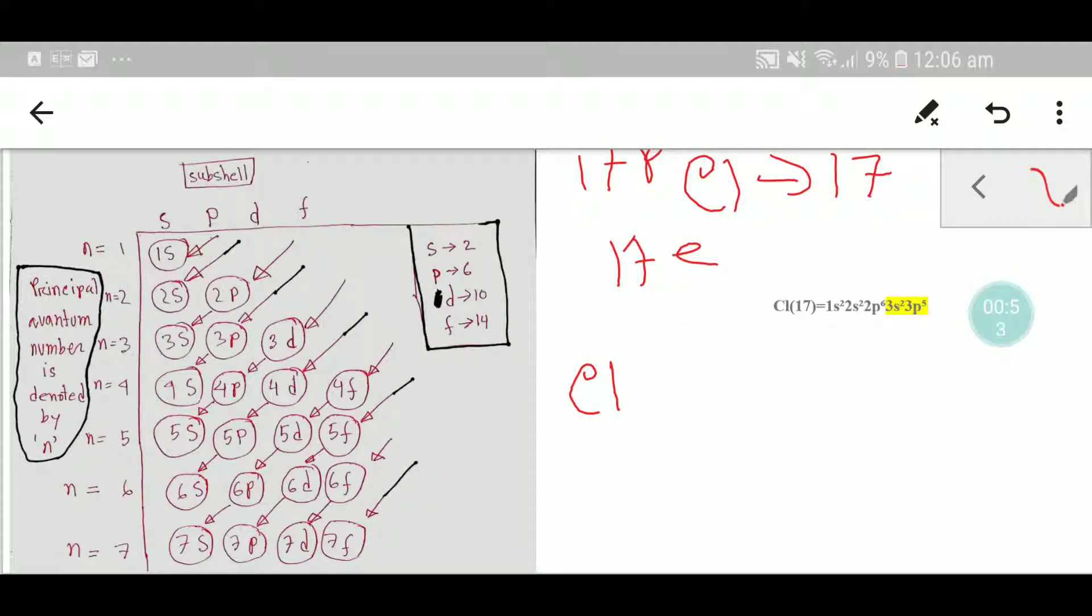We know that chlorine has 17 electrons. So according to this chart, you can do the electronic configuration of chlorine. 1s can take a maximum of 2 electrons, then 2s can take a maximum of 2 electrons, then 2p can take a maximum of 6 electrons.